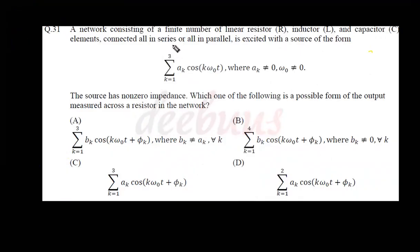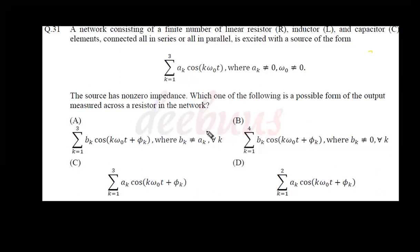Moving to the next question: a network consisting of a finite number of linear resistor R, inductor L, and capacitor C elements connected all in series or all in parallel is excited with a source of the form ∑(k=1,2,3) Aₖ cos(kω₀t), where Aₖ ≠ 0 and ω₀ ≠ 0. The source has non-zero impedance. Which is a possible form of the output across a resistor? I take a simple R, L, C combination applying voltage v(t).